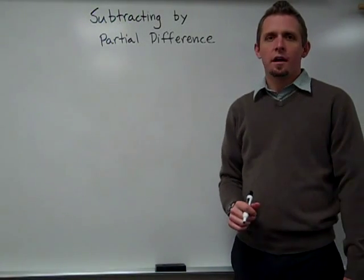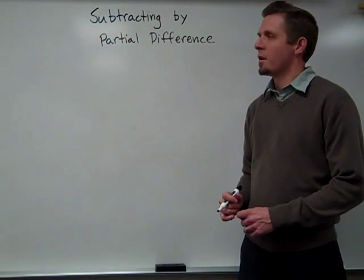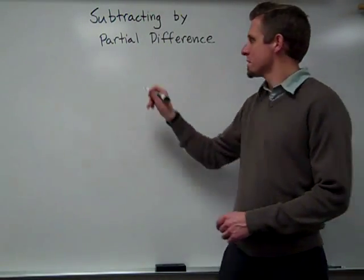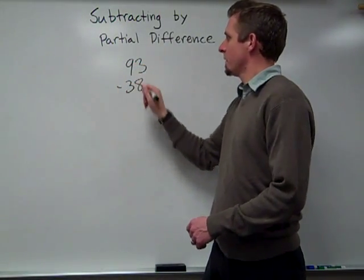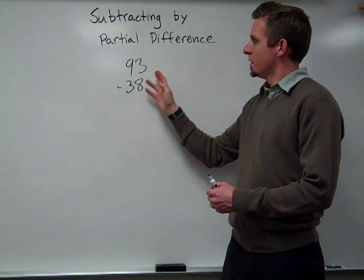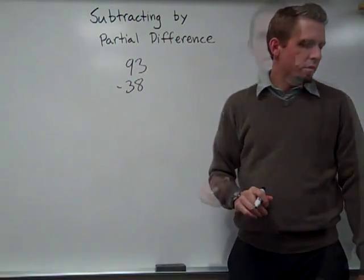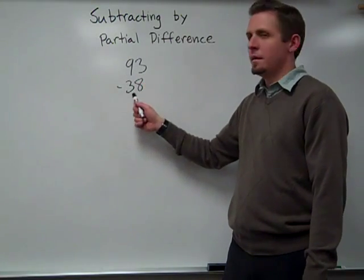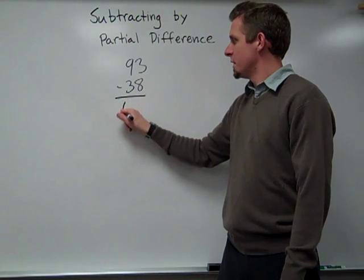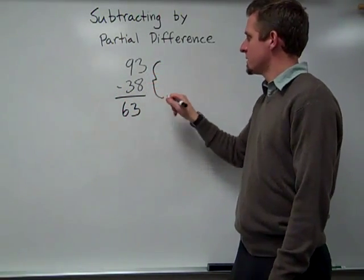This is another algorithm that's used in the Netherlands. It's called subtracting by partial difference. The way it works is I do 93 minus 38. But instead of working from right to left, I actually work from left to right. So my thinking here, I go 93 minus 30, which gives me 63. So I'll put my thinking off here to the side so you can see it. So it's 93 minus the 30, which gave me my 63.